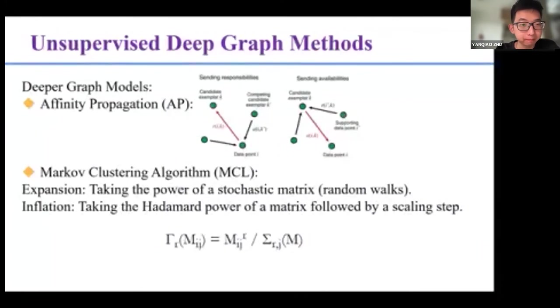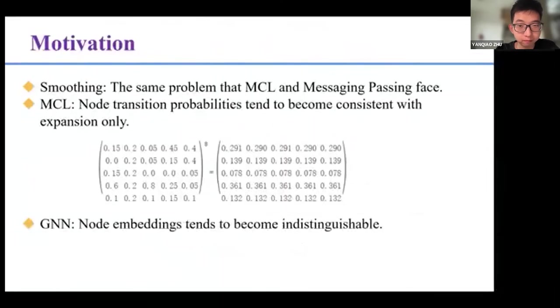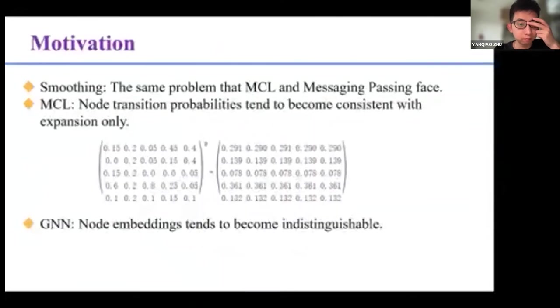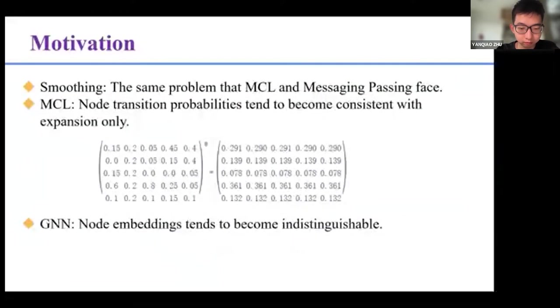We want to find an inspiration to deepen graph neural networks' message passing in an easier way from them. Here, we propose that MCL and the graph neural networks encounter the same problem of smoothing. For MCL, after only eight random walks as shown, the transition probabilities of nodes are completely consistent, which cannot represent the clustering results on the graph. It means that only expansion or the random walk will cause smoothing problems for graph learning.